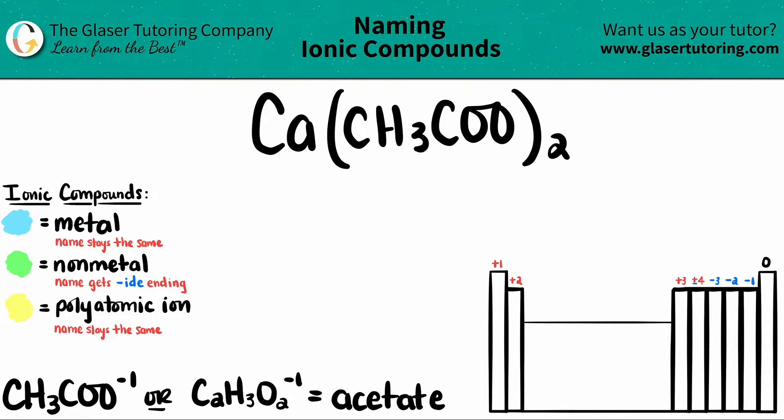Keep in mind that polyatomic ions are never found on the periodic table. You have to memorize them. I've put the one we're going to find here.